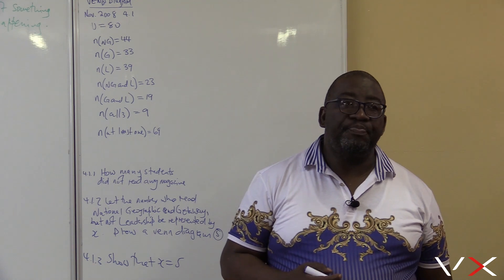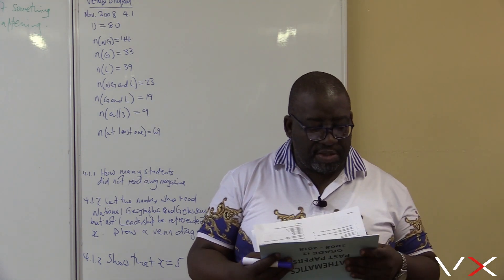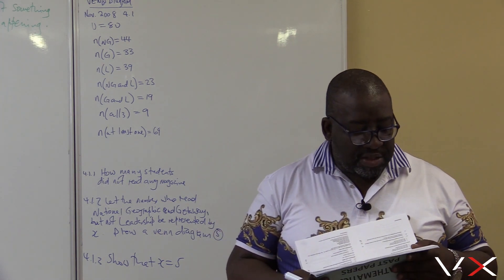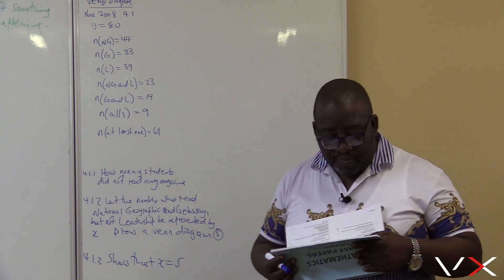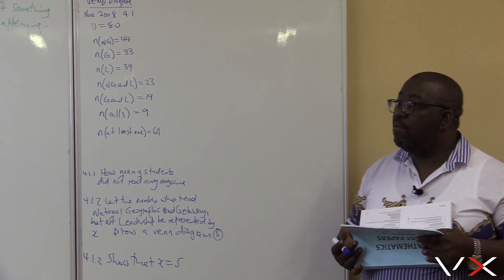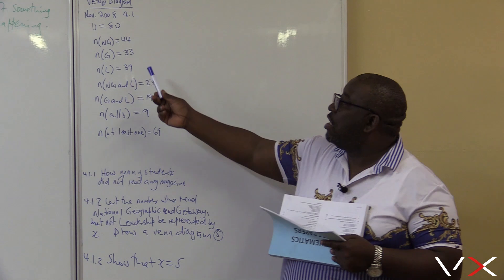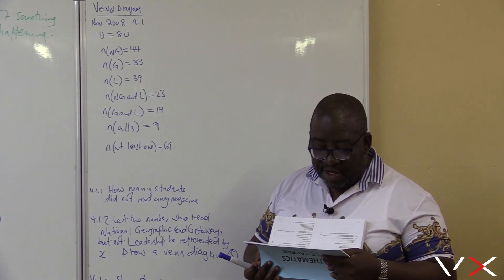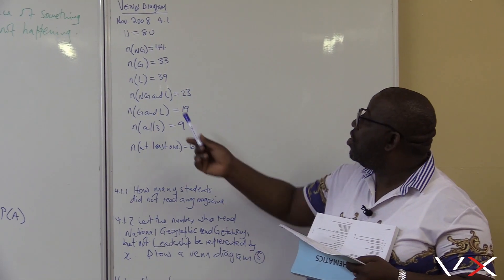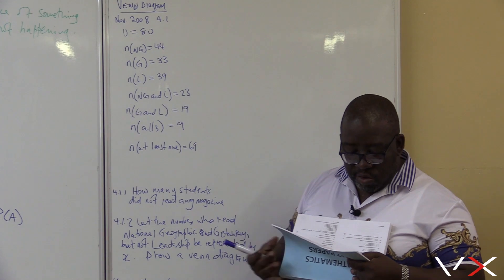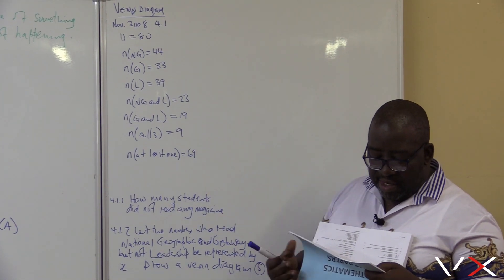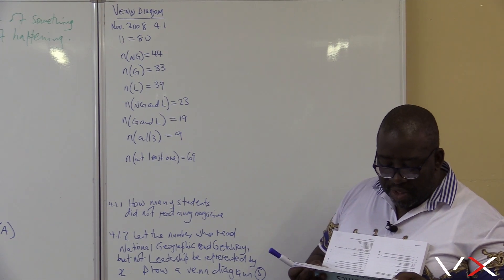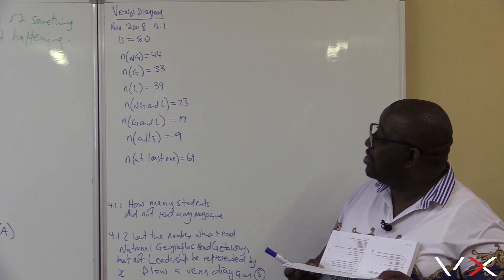That's what the event diagram is. I'm looking at the questionnaire that was set in November 2008. It says a survey of 80 students at a local library indicated their reading preferences. So this is telling me that there are about 80 students participating in this reading preferences survey. 44 read National Geographic, 33 read Getaway Magazine, 39 read Leadership Magazine, and 23 read both National Geographic and Leadership Magazine.